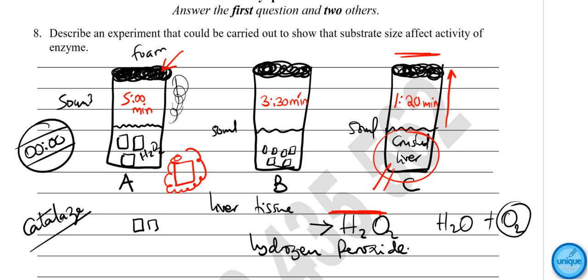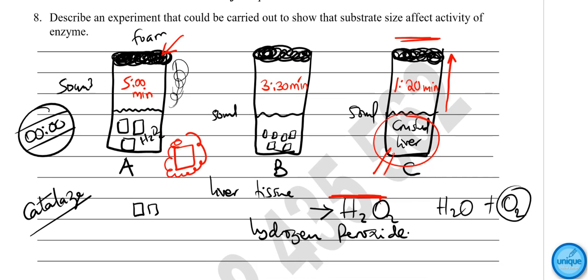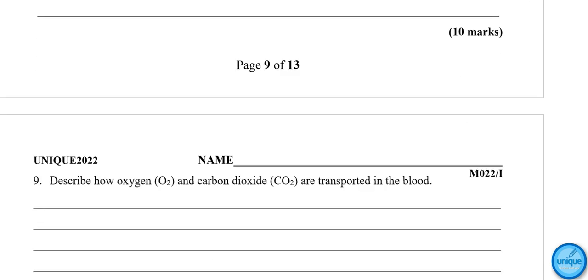The conclusion is: the larger the size of the particles, the slower the activity of enzymes; and the smaller the size of the particles, the faster the reactivity of enzymes. That is the experiment about how substrate size affects enzyme activity.